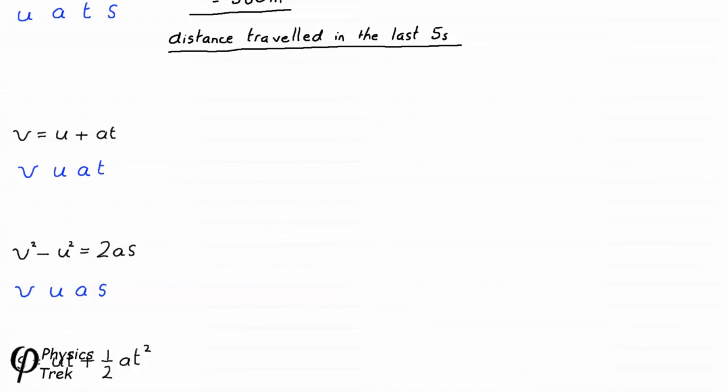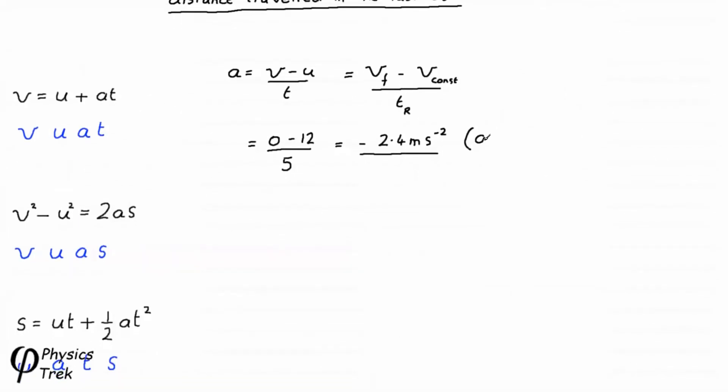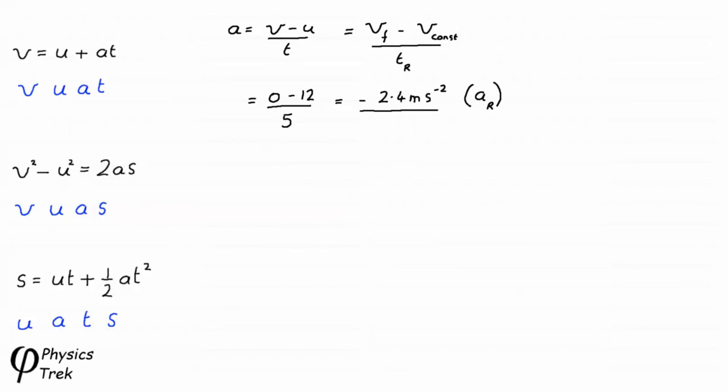The definition of acceleration equals the change in velocity divided by the time taken. In other words, (v - u)/t. Using our symbols, that's Vf minus V_const divided by the time tᵣ, time for retardation. Putting in the numbers: (0 - 12)/5, which gives us -2.4 m/s². I'm just putting in brackets here Aᵣ to remind us that this is not an acceleration, it's a retardation, Aᵣ.